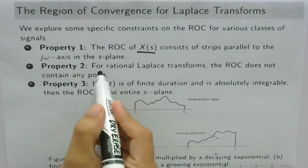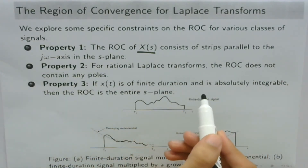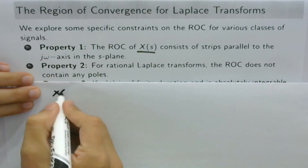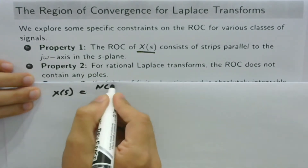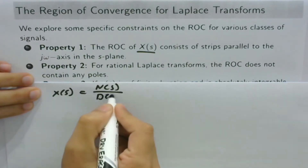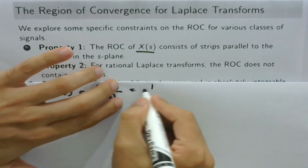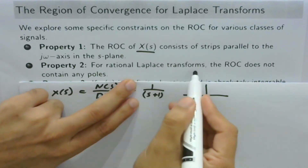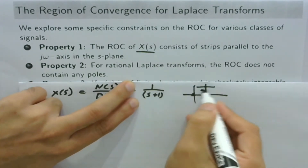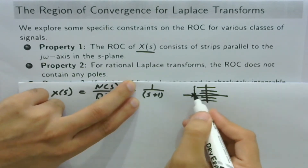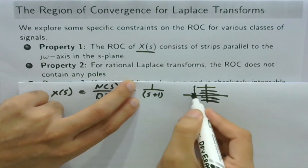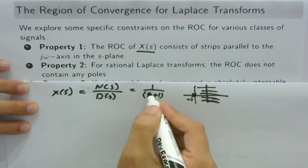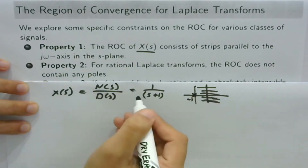The second property says that for a rational Laplace transform, the ROC does not contain any poles. For a rational Laplace transform, X(s) is expressed as a fraction. If we have a pole at s = −1, the ROC is to the right of this pole and the pole is not included, because setting s = −1 makes the denominator zero and X(s) approaches infinity.